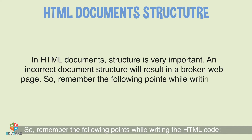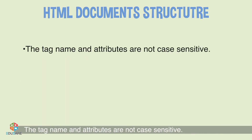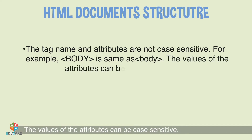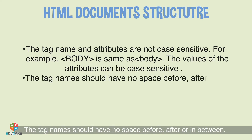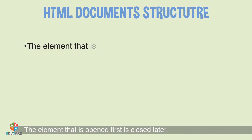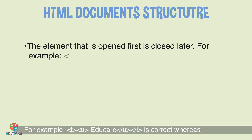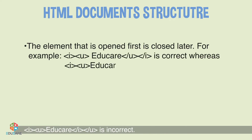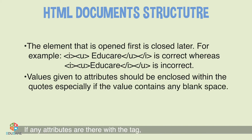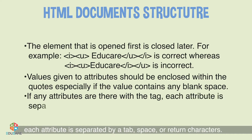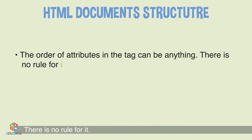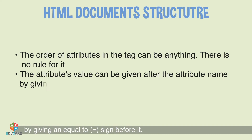Remember the following points while writing HTML code: The tag name and attributes are not case sensitive — for example, BODY and body are the same. The values of the attributes can be case sensitive. The tag names should have no space before, after, or in between. The element that is opened first is closed later. Values given to attributes should be enclosed within quotes, especially if the value contains any blank space. If any attributes are present with the tag, each attribute is separated by a tab, space, or return characters. The order of attributes in the tag can be anything — there is no rule for it. The attribute's value is given after the attribute name with an equal sign before it.